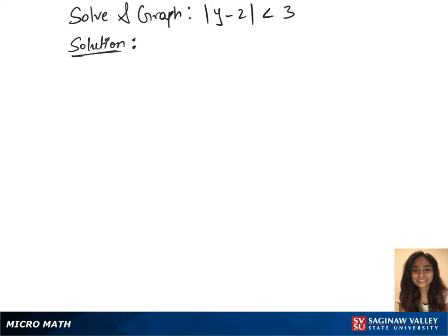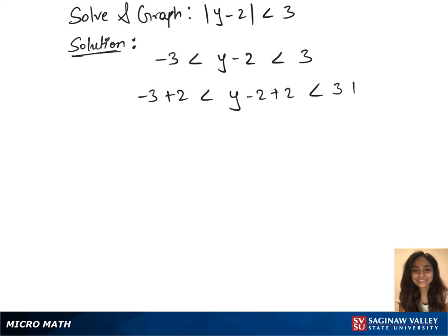This absolute value inequality is equivalent to minus 3 less than y minus 2 less than 3. Now add 2 on all 3 sides of this compound inequality. So that is minus 3 plus 2 less than y minus 2 plus 2 less than 3 plus 2. The next step will have minus 1 less than y less than 5.